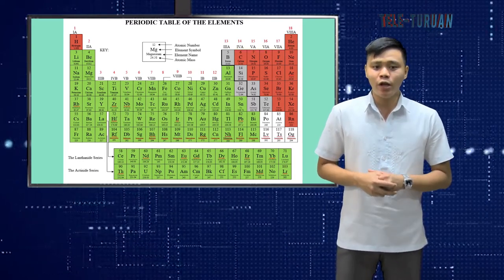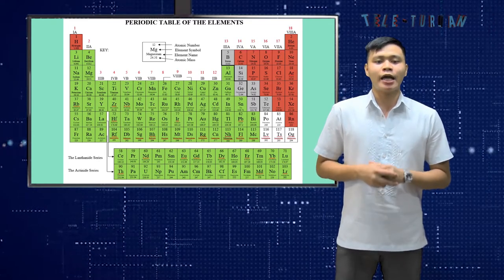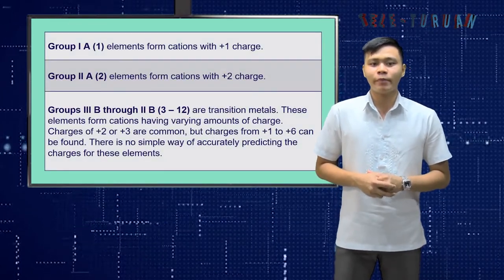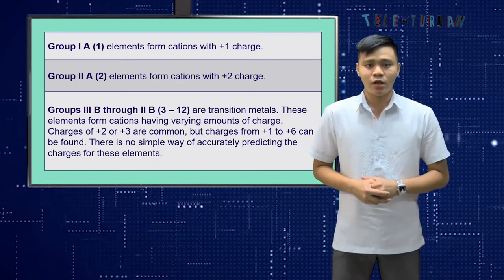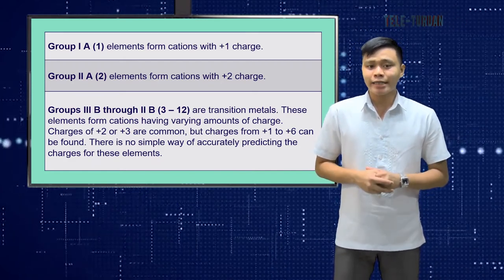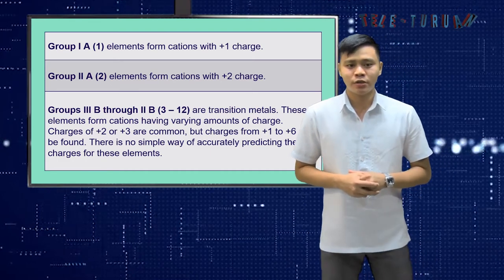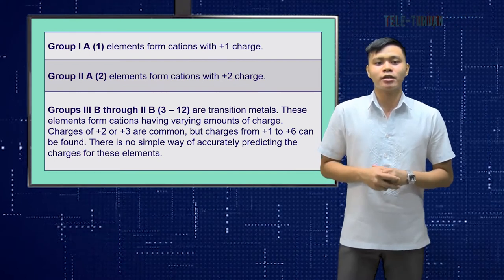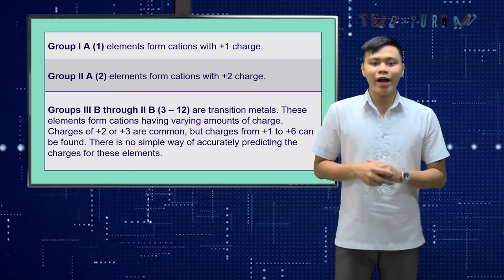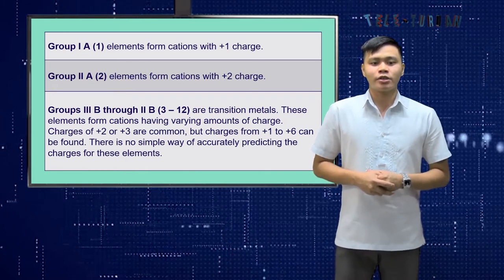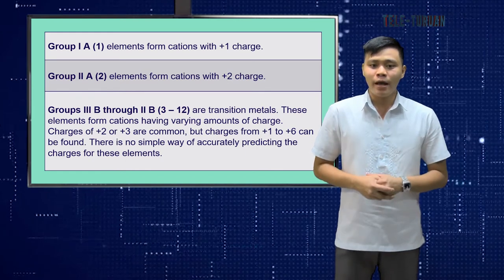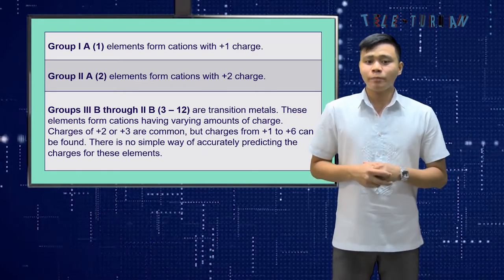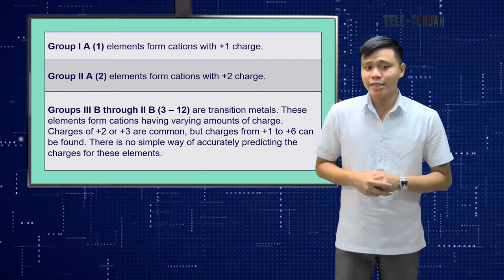Group 1A elements form cations with a +1 charge. Group 2A elements form cations with a +2 charge. Group 3B through 2B are transition metals. These elements form cations having varying amounts of charge. Charges of +2 or +3 are common, but charges from +1 to +6 can be found. There is no simple way of accurately predicting the charges for these elements.